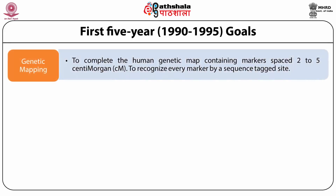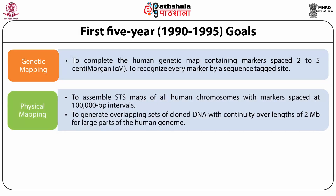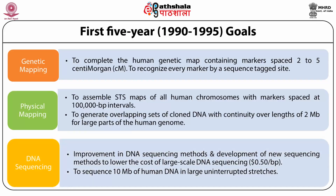Genetic mapping involved completion of a human genetic map containing markers spaced 2 to 5 cM and recognizing every marker by a sequence tagged site. Physical mapping involved assembling STS maps of all human chromosomes with markers spaced at an interval of 100,000 base pairs, and generation of overlapping sets of cloned DNA with continuity over lands of 2 MB for large parts of the human genome. DNA sequencing involved improvement in existing methods such that cost would come down to 50 cents per base pair.